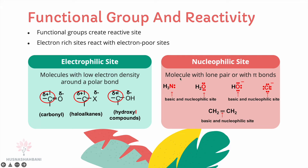Nucleophilic sites are found in molecules with lone pairs or pi bonds. NH3 has a lone pair on N, making it a nucleophilic site. Water (H2O) has two lone pairs on oxygen, making the oxygen the nucleophilic site. OH⁻ is negatively charged with three lone pairs, making it nucleophilic. Cl⁻ is also a nucleophilic site. For molecules with pi bonds, such as a C=C double bond containing one sigma and one pi bond, the double bond region is the electron-rich nucleophilic site.